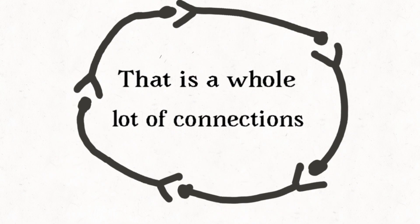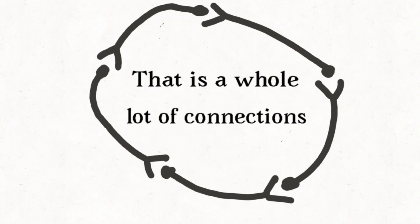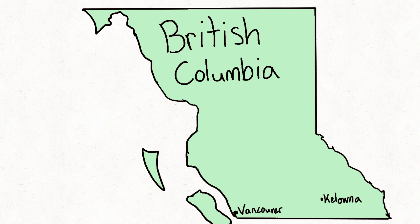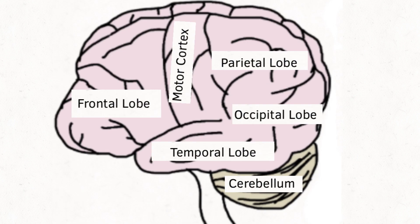That is a whole lot of connections. Your brain is just like a map. It has different regions called lobes.